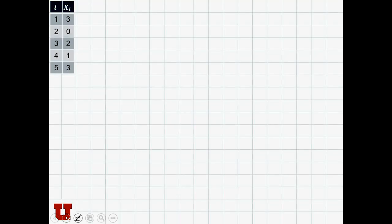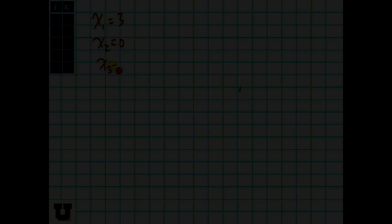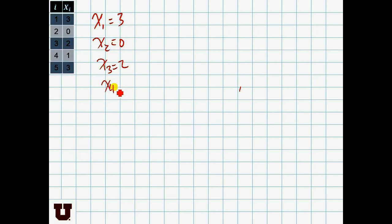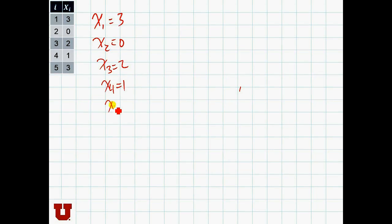So here we have a list of five numbers: x1 is 3, x2 is 0, x3 is 2, x4 is 1, and x5 is 3. If we want to just sum up these five numbers...